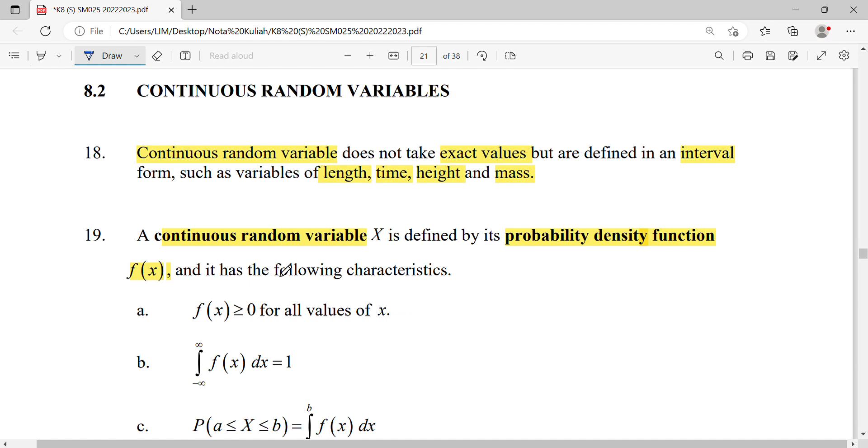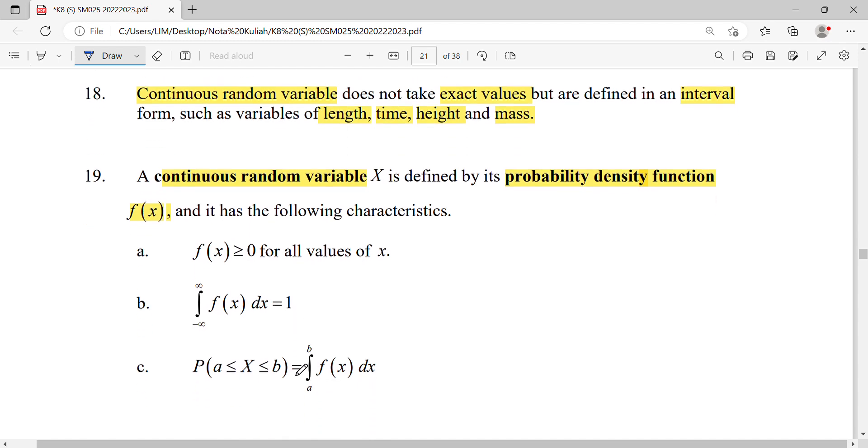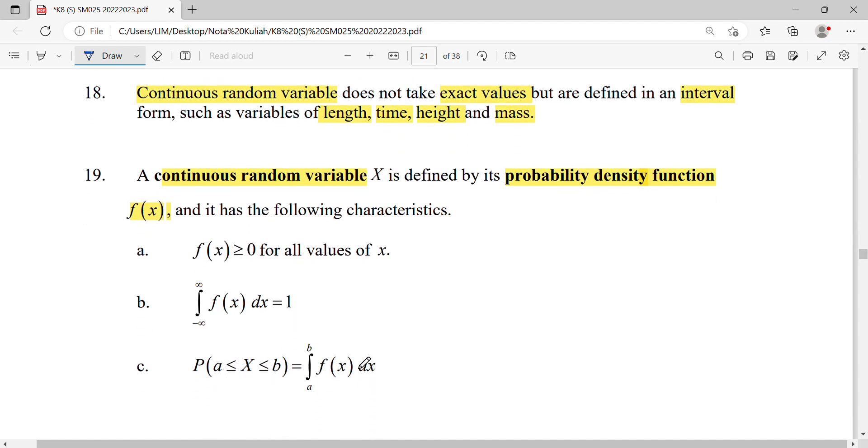The function represents your probability, so it's always positive. When you integrate from the lower limit to the maximum limit, you get one. To find probability, you're actually finding the integration area under the graph. When finding probability for x between a and b, you integrate from a to b.